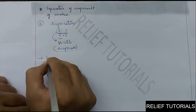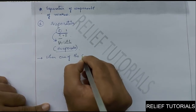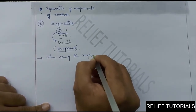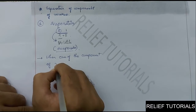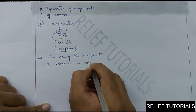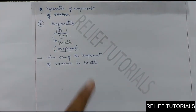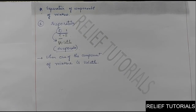Evaporation process is only used when one of the components of the mixture is volatile. A volatile substance is one which can easily be converted from its liquid state to gaseous state — meaning it easily evaporates — so that substance can be easily separated through the process of evaporation.